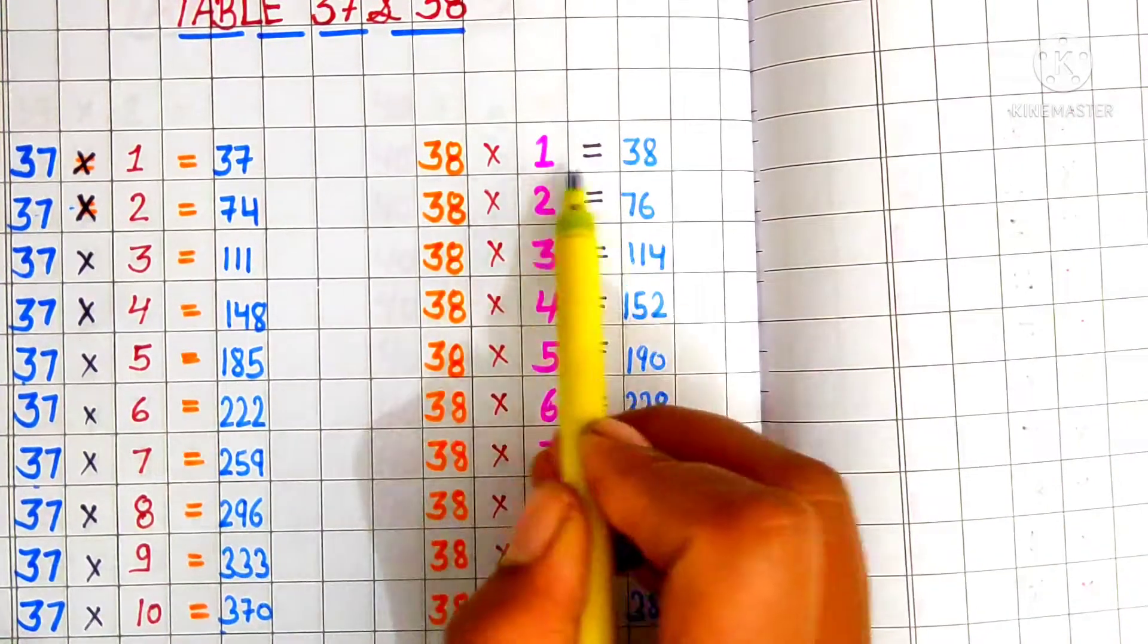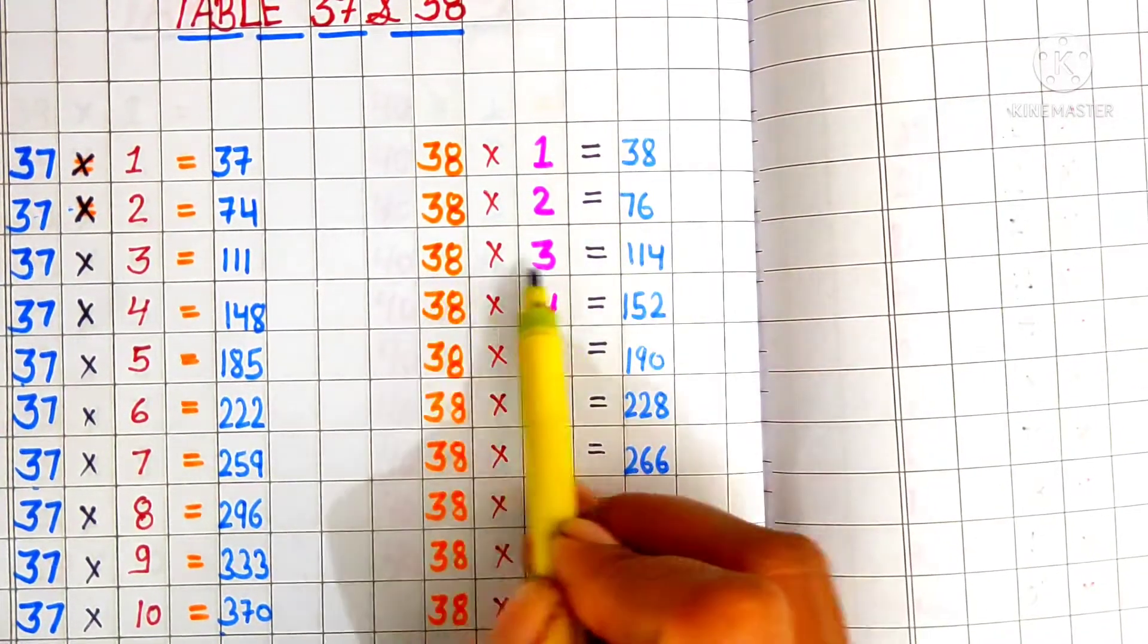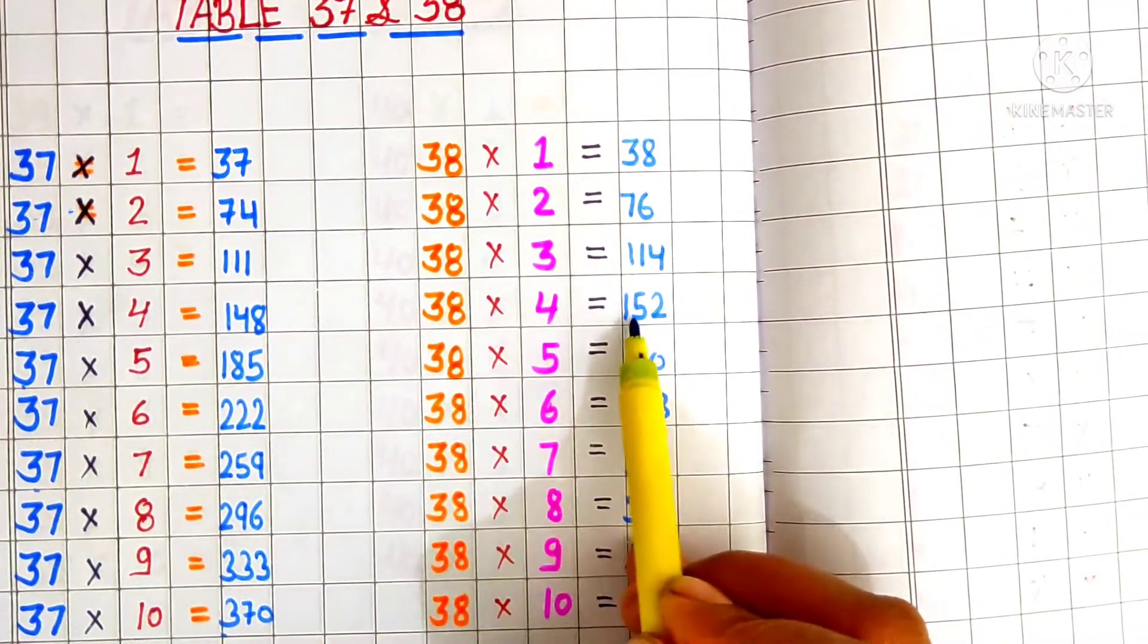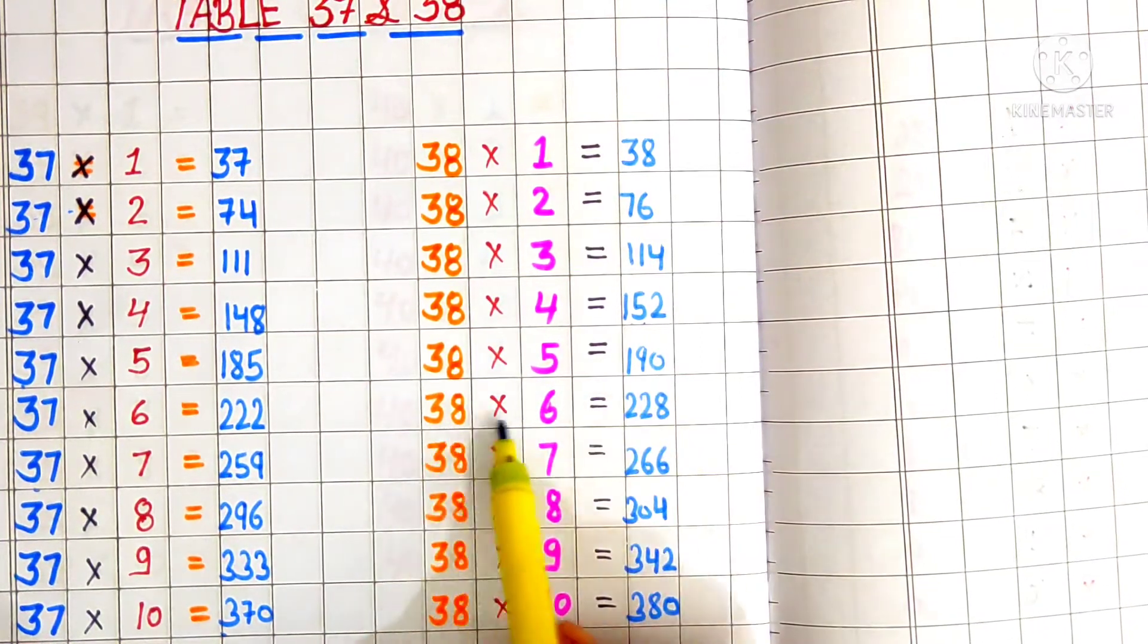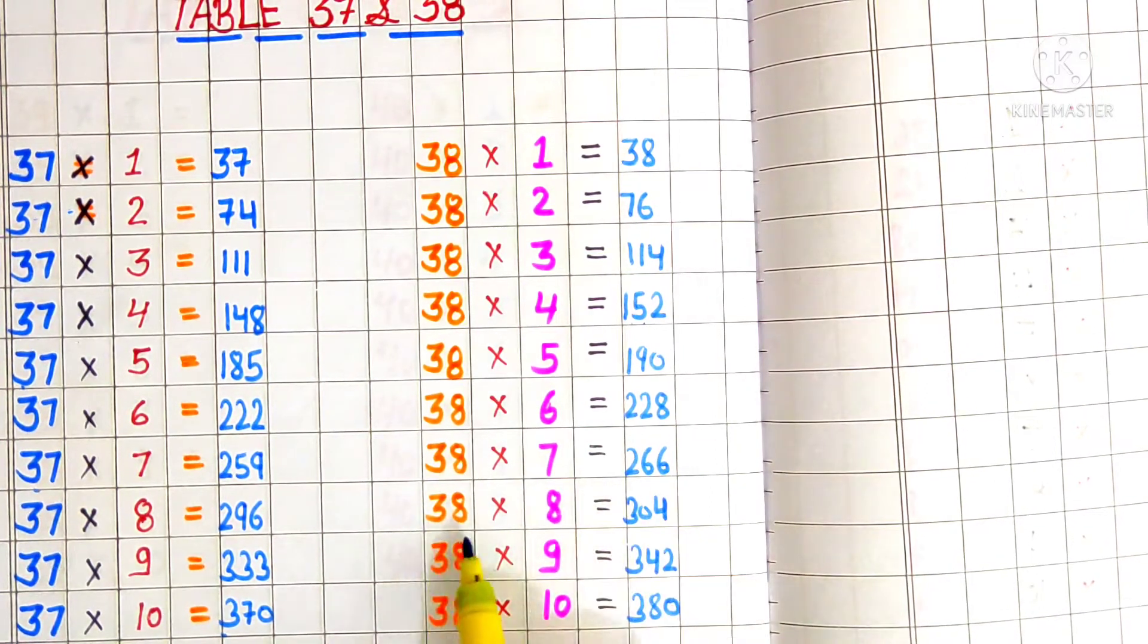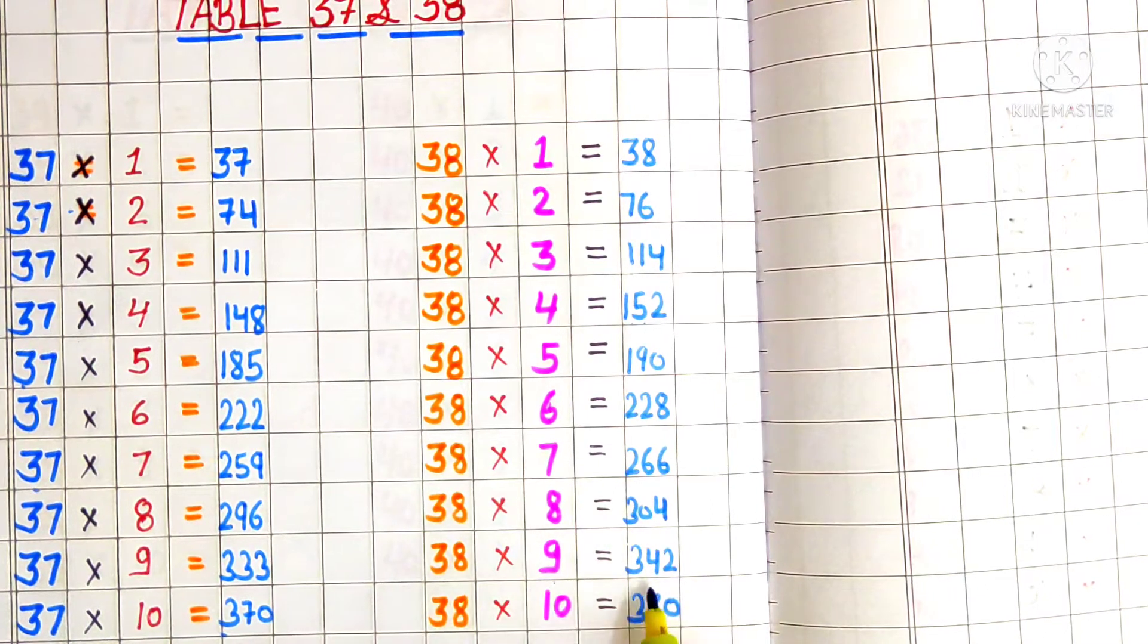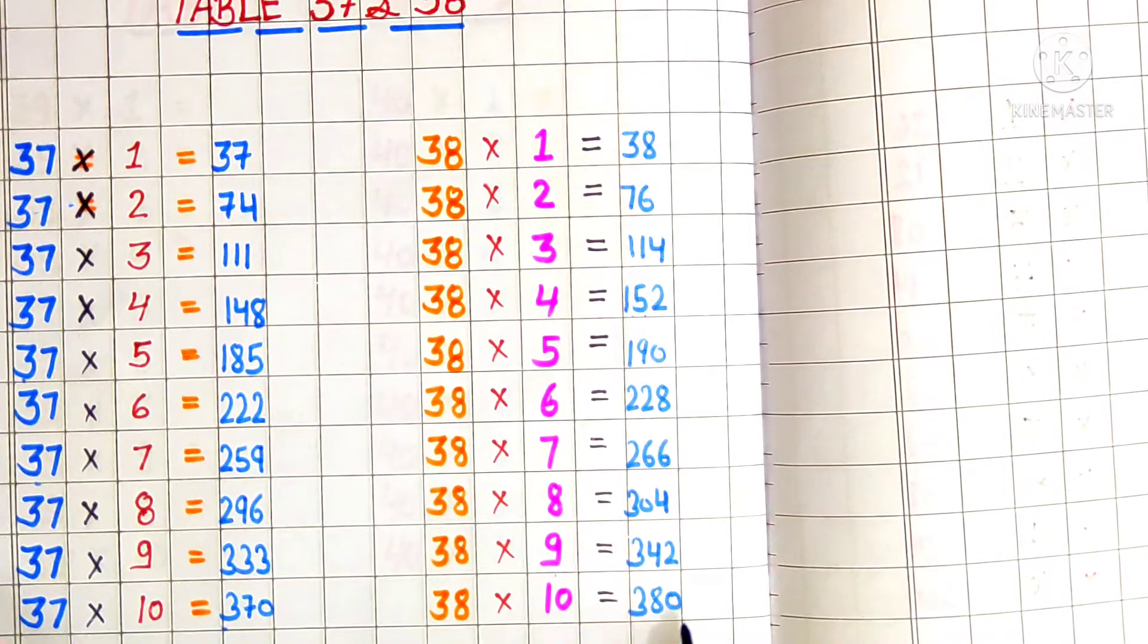38 ones are 38. 38 twos are 76. 38 threes are 114. 38 fours are 152. 38 fives are 190. 38 sixes are 228. 38 sevens are 266. 38 eights are 304. 38 nines are 342. 38 tens are 380.